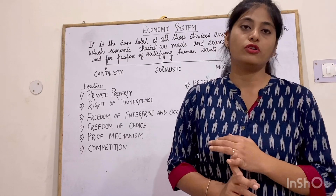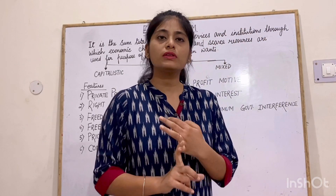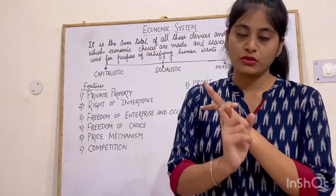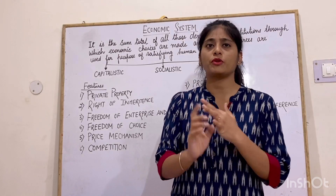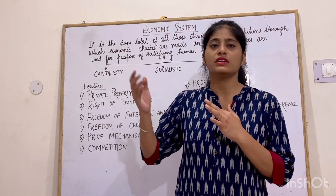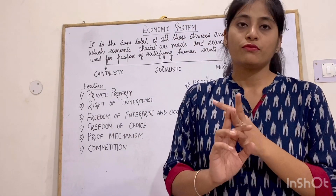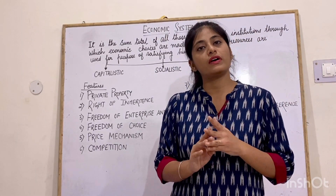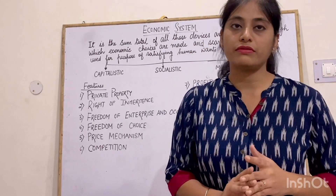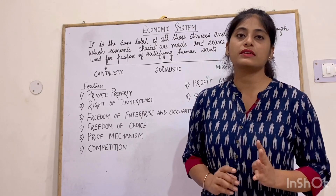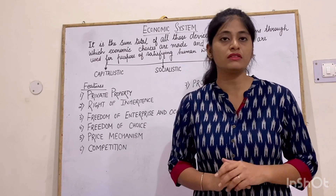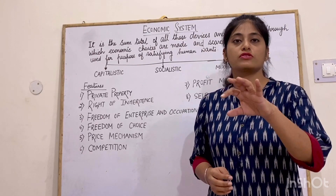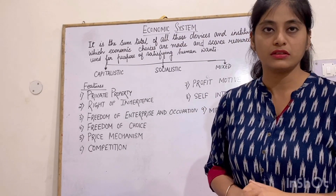To repeat: a capitalist economy is an economy where all the productive resources are owned by private individuals. The productive resources like land, labor, and capital — these belong to private individuals. They are working to earn profit. The role of government is minimum interventions. And lastly, the activities of the capitalist economies are basically unplanned and unorganized because they don't have any such planning authority.